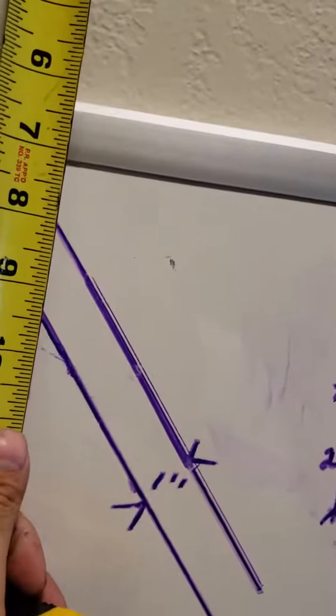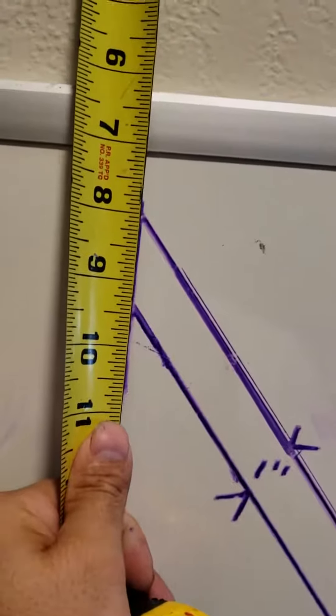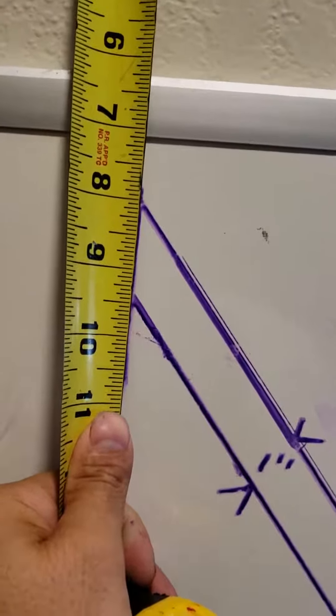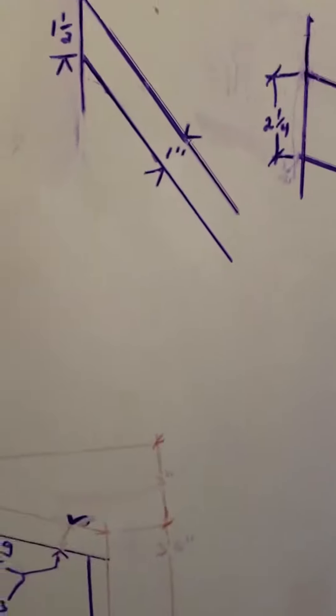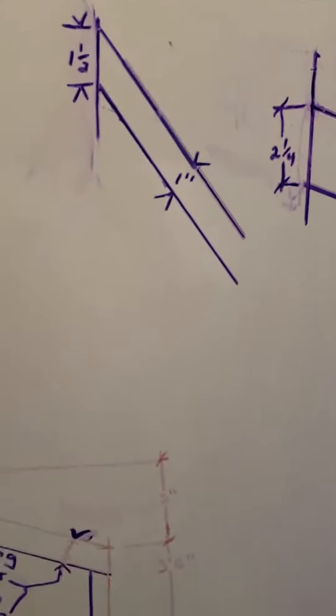You actually have to snap it out. And when you do, in this case, you get about an inch and a half. Now, of course, this is a marker. It's a little thicker, harder to draw. Snap line would be a lot more accurate.